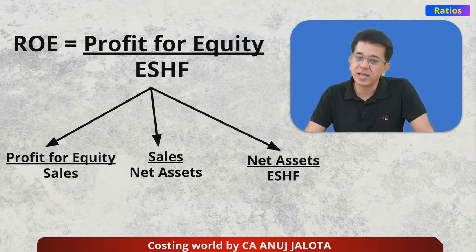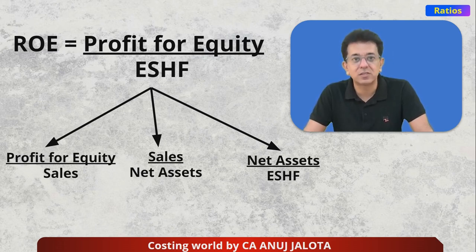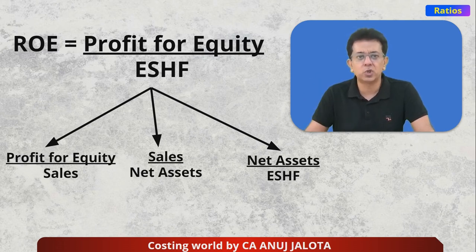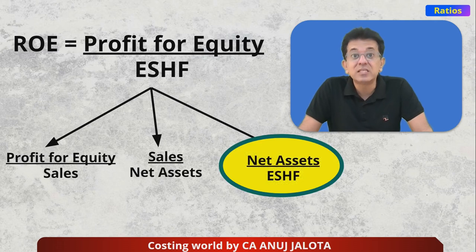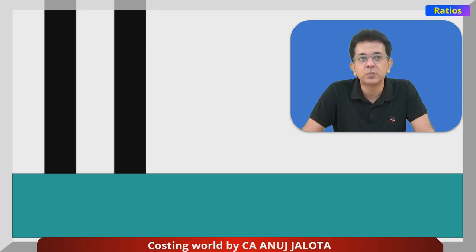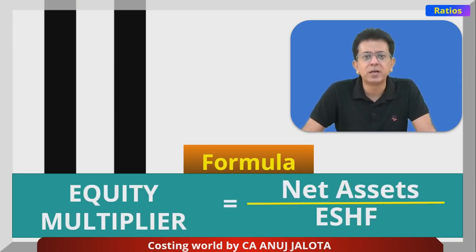The first part tells us the rate at which you earn profit on sales. The second part tells you how effectively you are using assets to generate sales. The third part is the Equity Multiplier. When you multiply the first, second, and third ratios together, you arrive at ROE. We are interested in this third part.